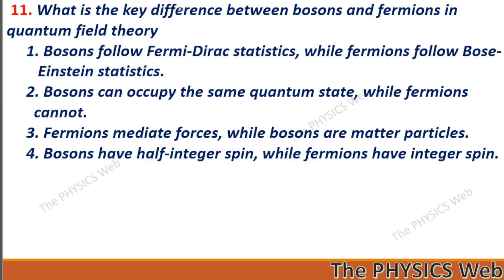Next: what is the key difference between bosons and fermions in quantum field theory? Bosons can occupy the same quantum state while fermions cannot. So, two is your correct option.